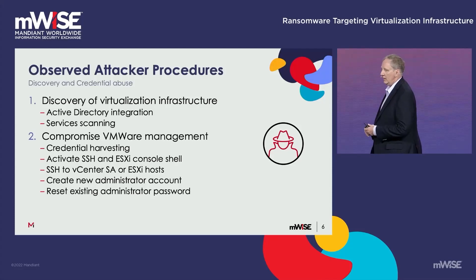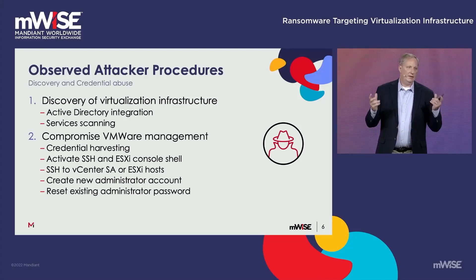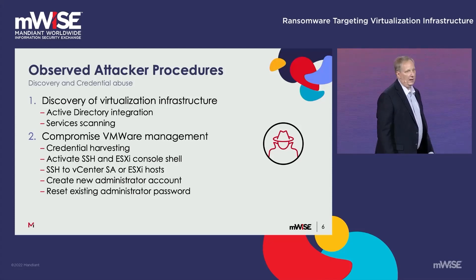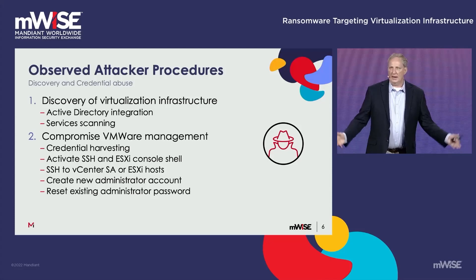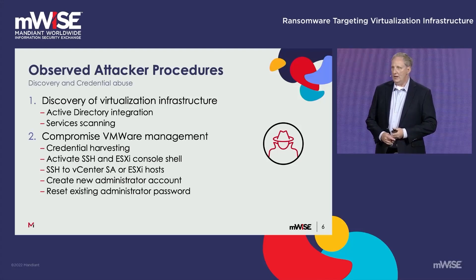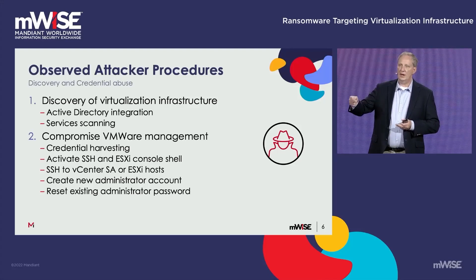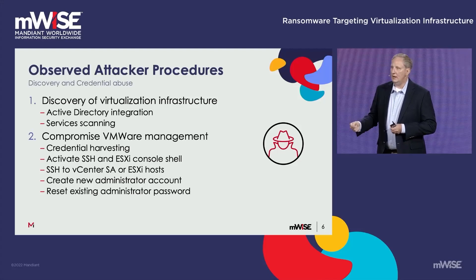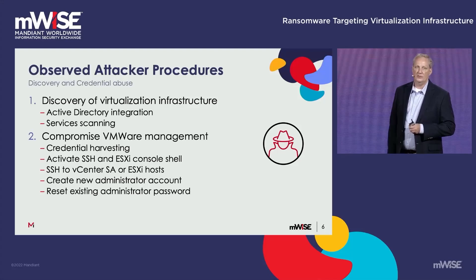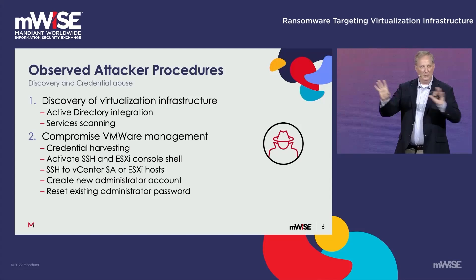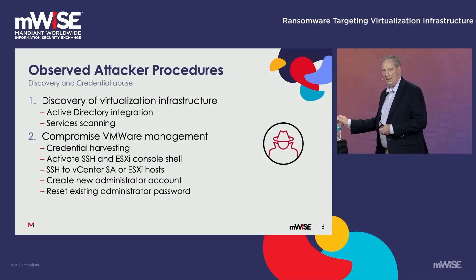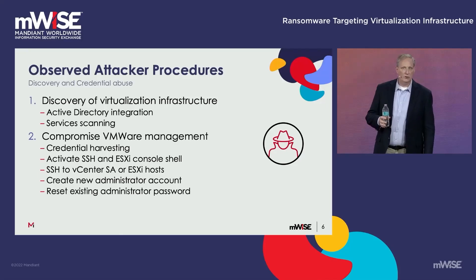The next stage is how do they get the credentials? Pick your favorite credential harvesting mechanism. If you've compromised a domain admin and you RDP into a domain controller and run Mimikatz to dump creds — that's pretty common. You could also find the administrators in that VMware group in Active Directory, find what machines they're on, target their administrative boxes, go onto those machines, and harvest credentials. There are a lot of different ways to do this. So we'll say credential harvesting is done and the attackers now have the credentials necessary to get onto the ESXi boxes.